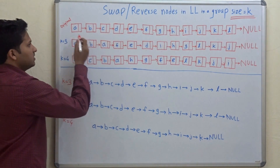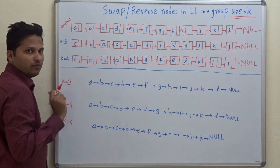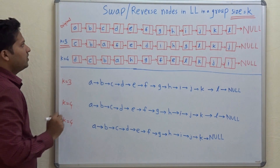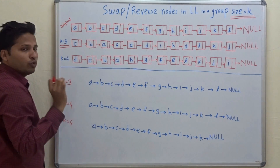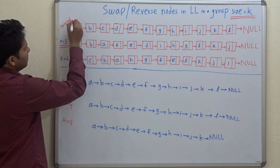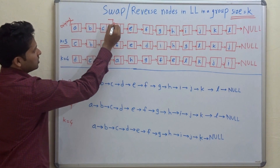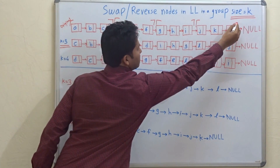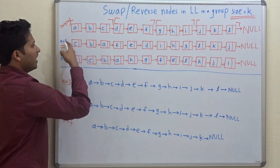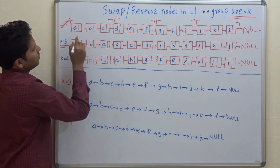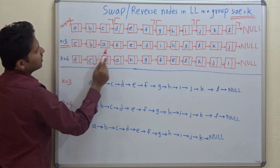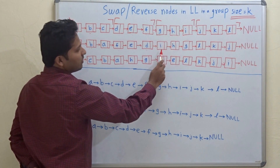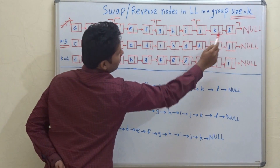Here is the linked list and the number of nodes in this linked list are 12. This is the original linked list and when k is equal to 3, we have to divide this linked list in groups of 3 nodes each. So the first 3 nodes, then these 3, then these 3 and the last 3 nodes. So ABC will become CBA, DEF will become FED, GHI will become IHG and JKL will become LKJ.